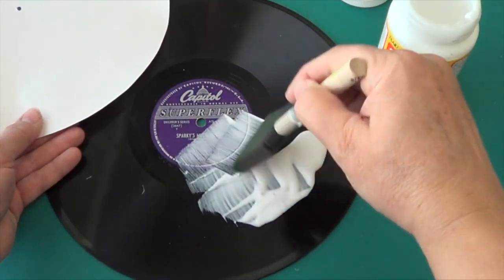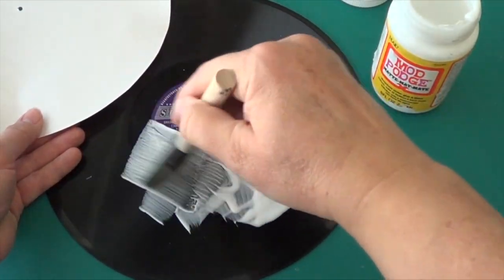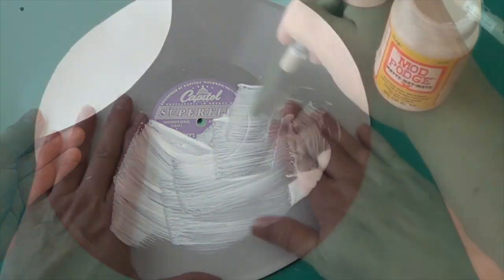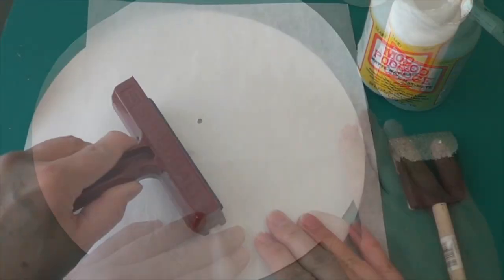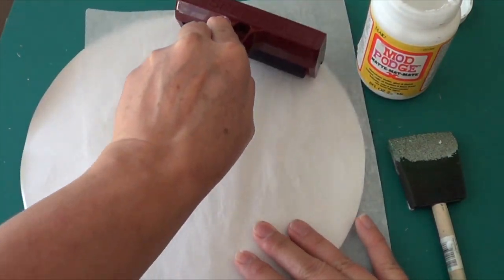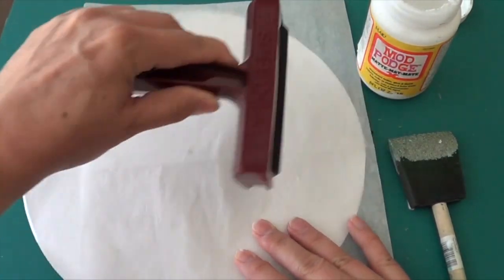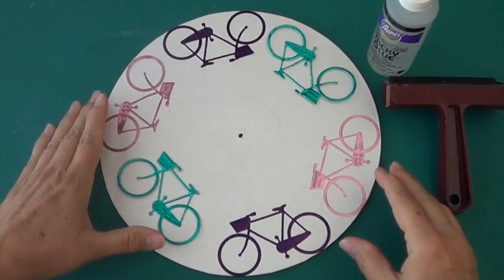Paint a nice thin coat of decoupage medium on the record. I would work one half at a time, and then press the paper down into position. Use a piece of parchment paper with a brayer to smooth it all down to get rid of any creases. You want to roll from the center out.